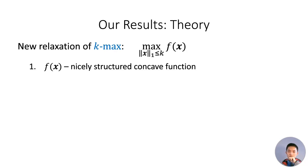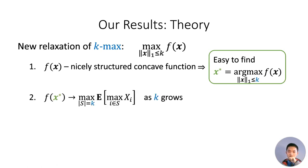To approach this problem, we propose a new continuous relaxation of the k-max problem's objective, which is a nicely structured concave function and can be easily optimized. Our relaxation approaches the exact objective as the parameter K grows. Moreover, it also works for the more general position auctions.